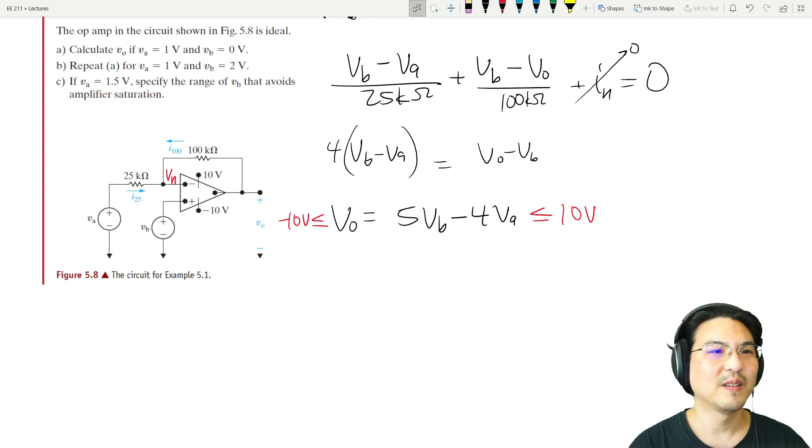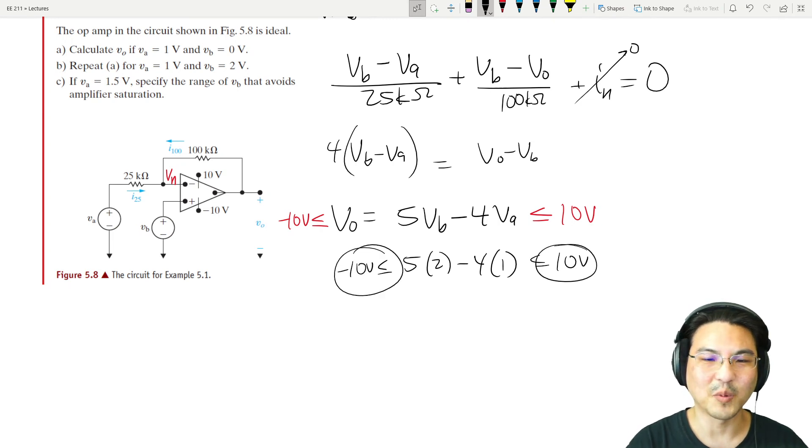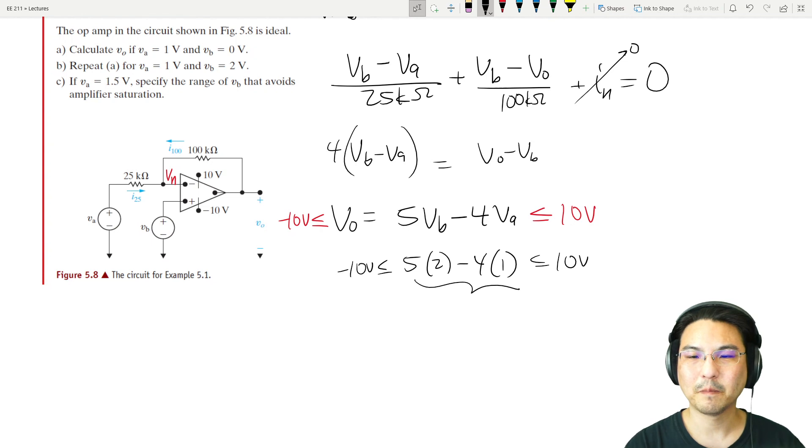Okay, part B. VA is 1 volt, VB is 2 volts. Okay, so is this less than or equal to, is it less than 10, more than negative 10? Yeah, this is 6, right? So B is 6 volts.